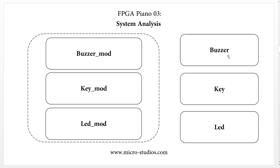For the buzzer, we will have the buzzer GPIO — it only has one control pin. For this pin we will use one interface: the buzzer output signal from the buzzer module to control the buzzer through the buzzer GPIO.